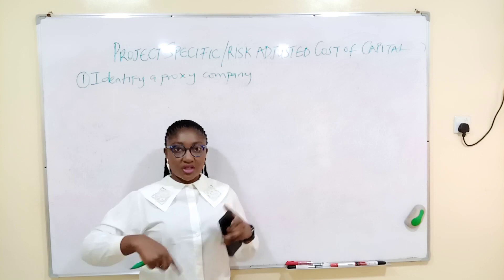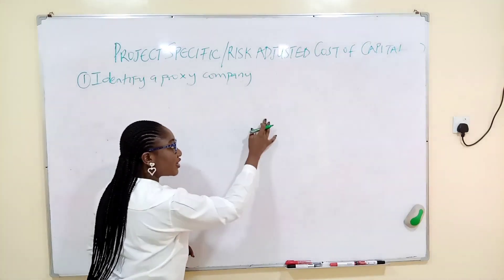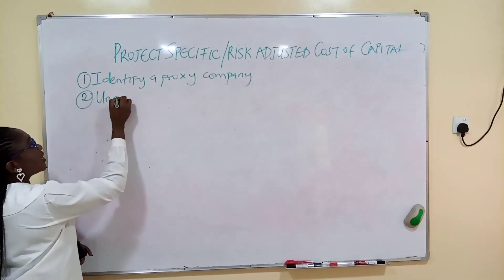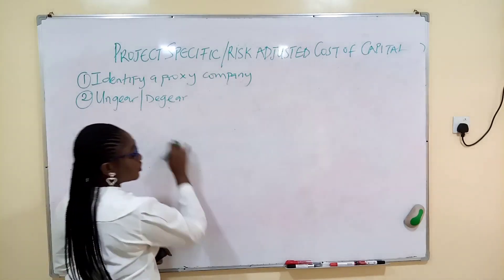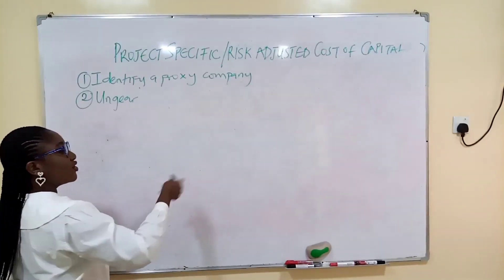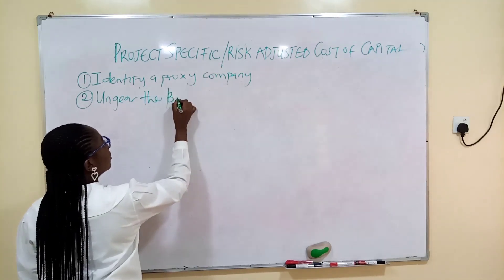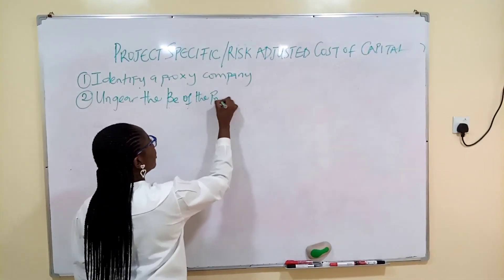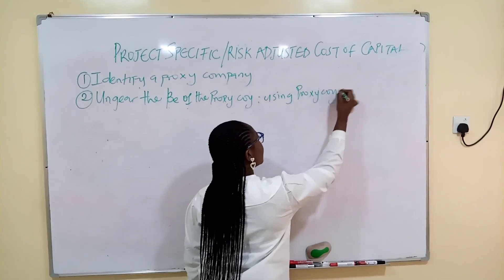The proxy company is a company that is probably already doing the business operation that the company of concern wants to go into. After you identify a proxy company, you get the information of that company — what is their business risk. So number two: you ungear — or degear, one is British, one is American — the beta equity of the proxy company, using the proxy company's information.